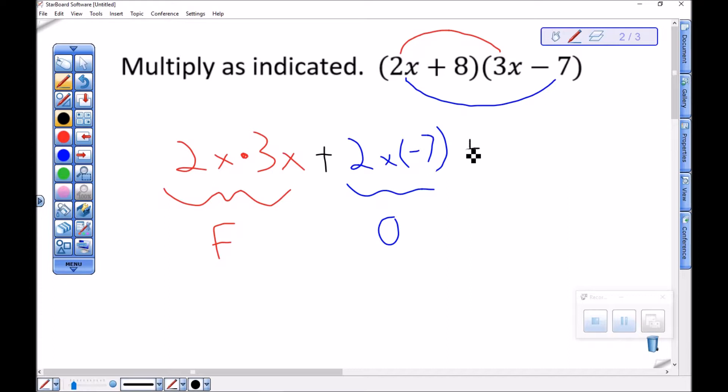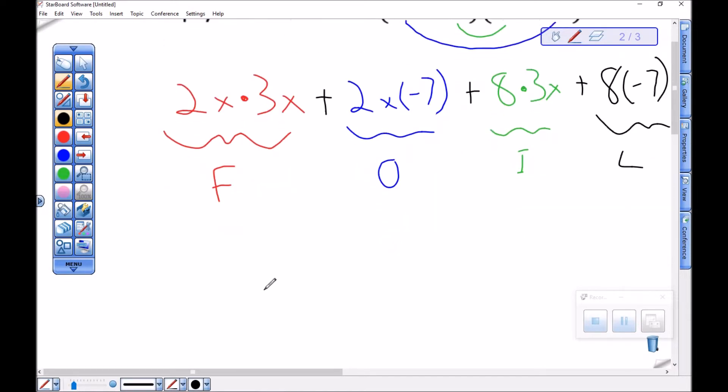Plus now my inside guys are this 8 times this 3x. And then finally my last guys are 8 times minus 7, watching that sign. So now to just multiply, 2x times 3x should be 6x squared.